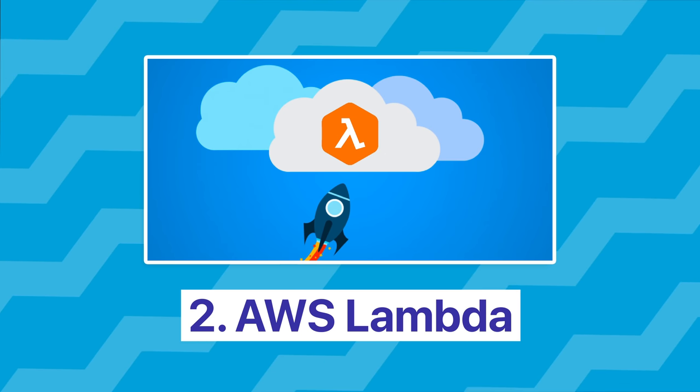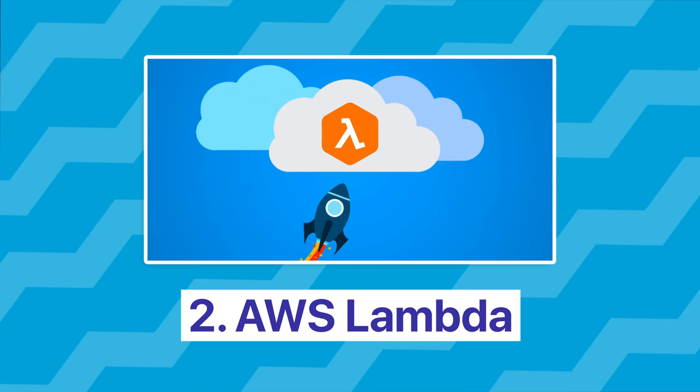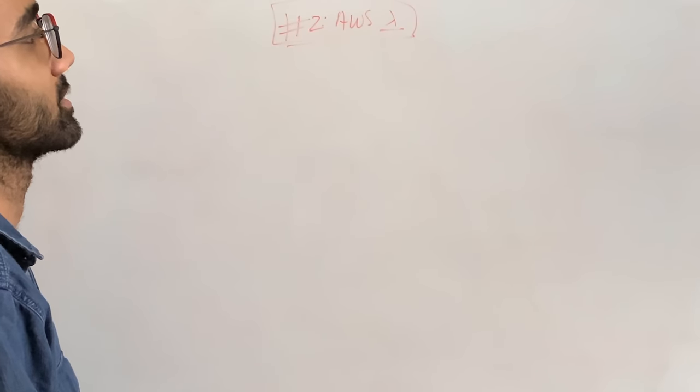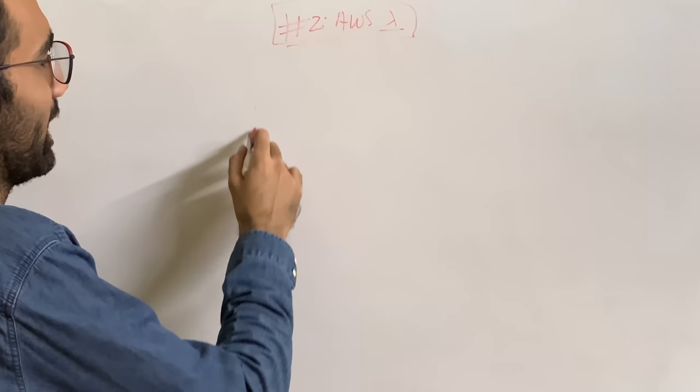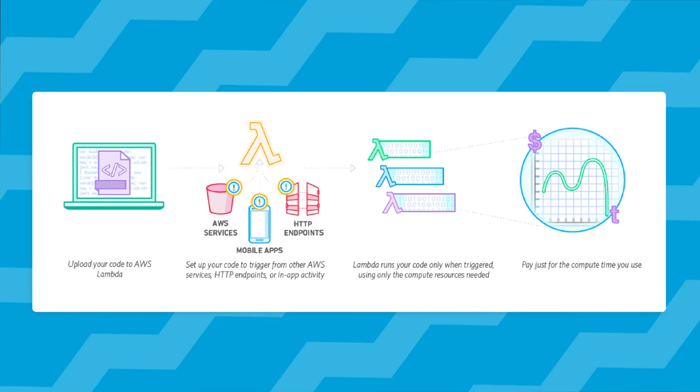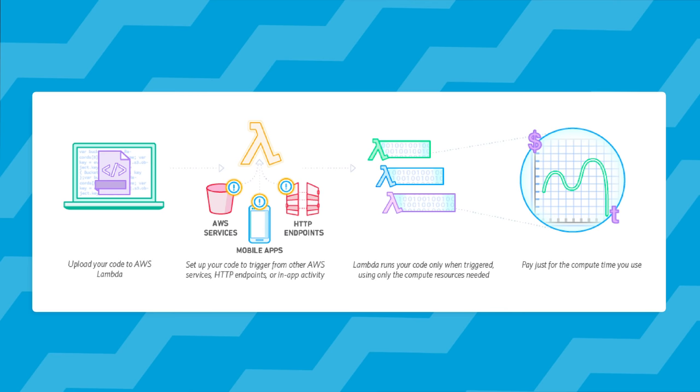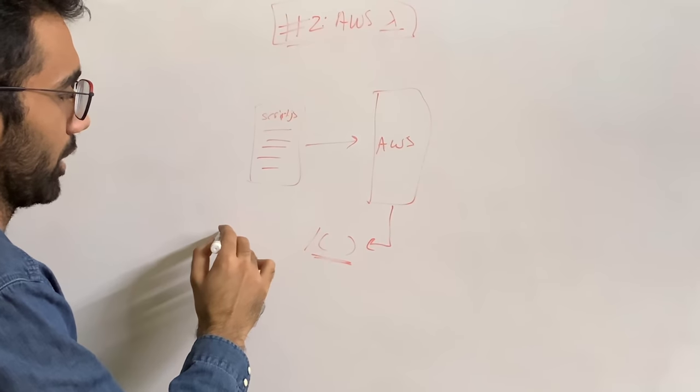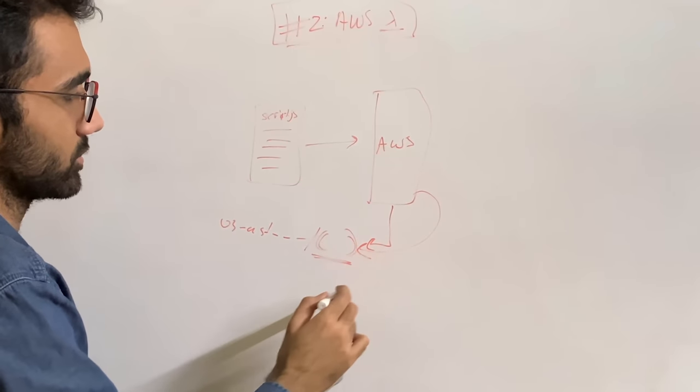The second way to host your API function is through AWS Lambda or any other serverless product which you can find. Most of the cloud providers offer you a serverless way to host something. The way this works is that you have your script.js file or whatever language you are using. It doesn't need to be just Node.js. You upload it to AWS and AWS gives you an endpoint on its own. This endpoint, whatever that would be, US East businesses slash something, this would be provided by AWS.